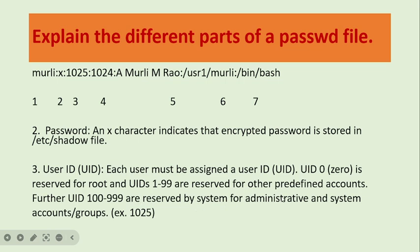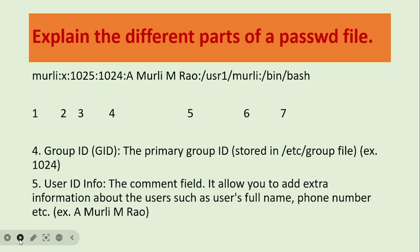As you can see, the UID 1025 is listed under system account or group. In every slide, I have all the entries listed so that you can follow along. Next is number 4: Group ID. We use GID. The value here is 1024, which is the primary group ID. The group ID is stored in the /etc/group file.